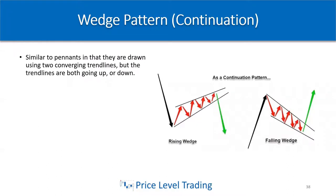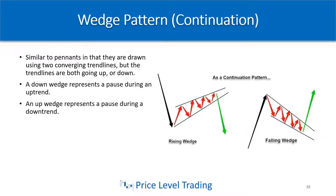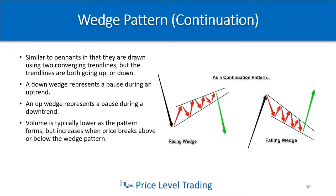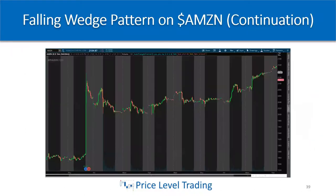One of my favorite patterns to trade is the wedge pattern — it's also a continuation pattern. It's similar to pennants in that they're drawn using two converging trend lines, but the trend lines are both going up or down — that's really important to know. A down wedge represents a pause during an uptrend, and an up wedge represents a pause during a downtrend. Volume is typically lower as the pattern forms but increases when price breaks above or below the wedge.